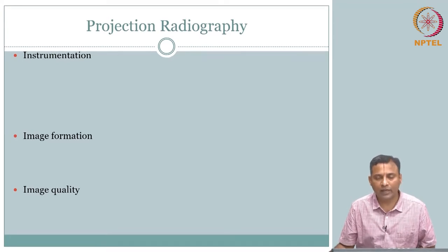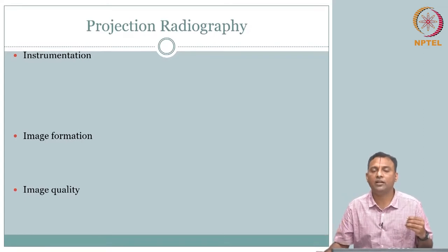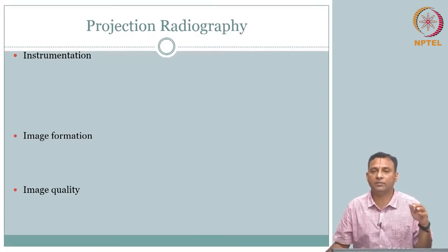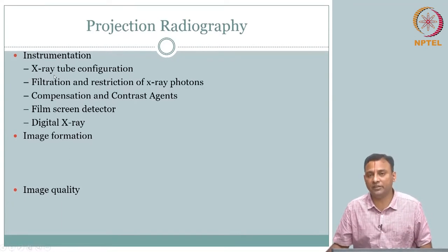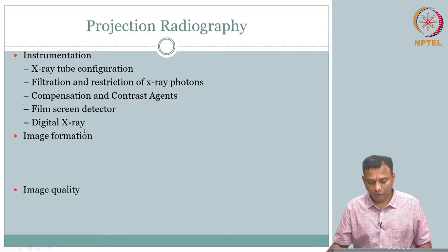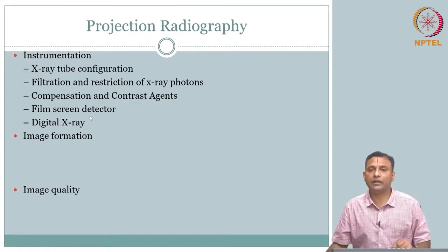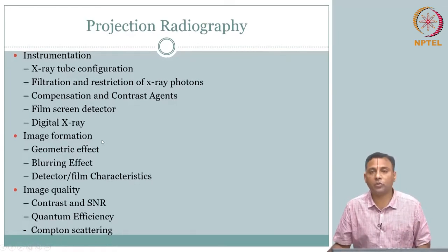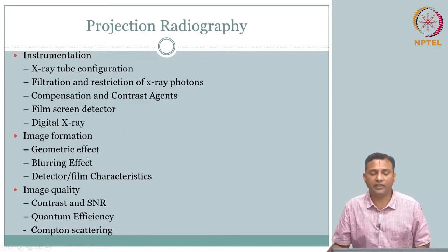We will get into projection radiography instrumentation first, then image formation, then image quality. Within instrumentation we will cover only the generic instrumentation — we will not cover customizations like mammography. The major instrumentation components are: x-ray tube, filtration and restriction, compensation and contrast agents, and film-screen detector. Digital x-ray is now very common and we will attempt to cover it if time permits.